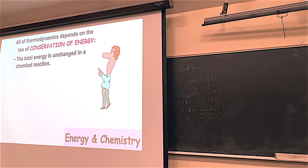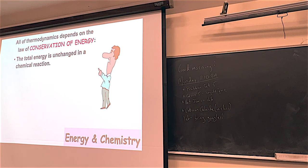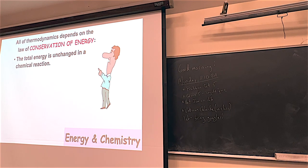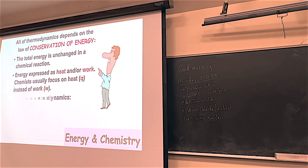Conservation of energy is one of the big laws of physical science - physics, chemistry, biology, geology, and all other sciences. In the conservation of energy, the total energy is not changed. The energy you start with equals the energy you end up with. So in chemistry, the total energy is unchanged when reactants go to products - whether it's graphite to diamond, diamond to graphite, burning paper, or gummy bears.